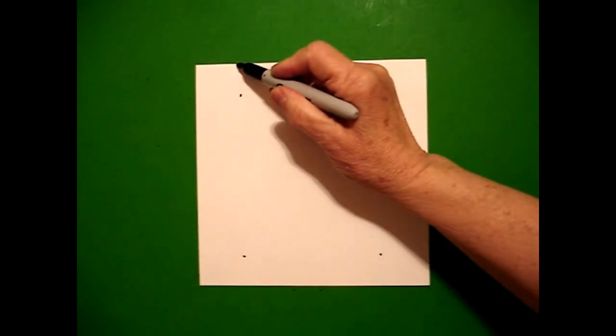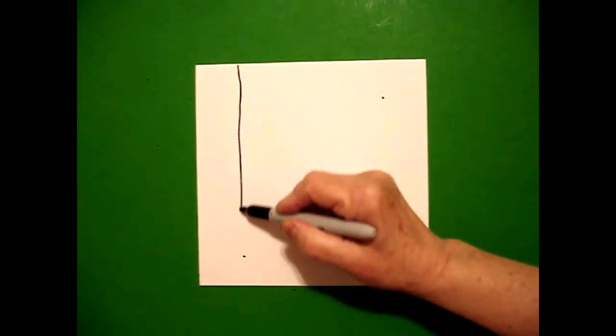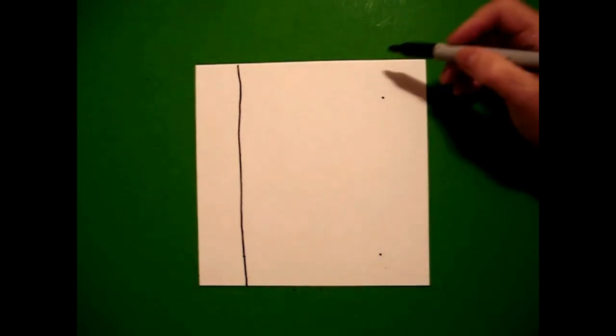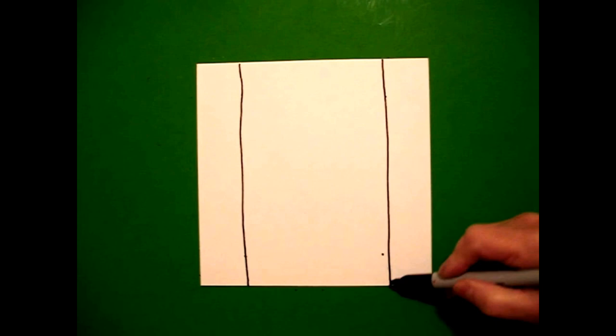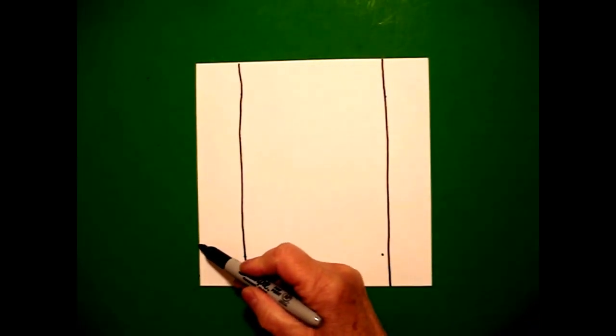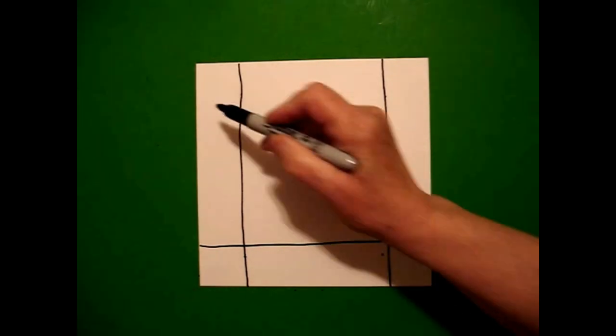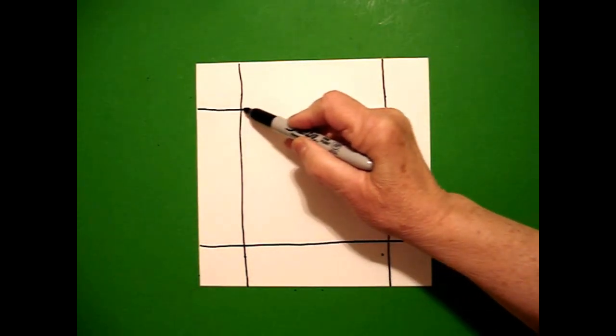Now I'm going to draw straight lines on the left all the way down, straight line all the way down on the right. Now I'm going to come across and I'm going to draw a straight line across on the bottom and a straight line across on the top.